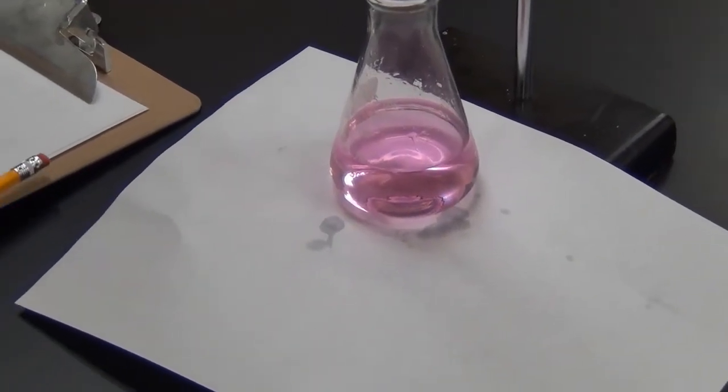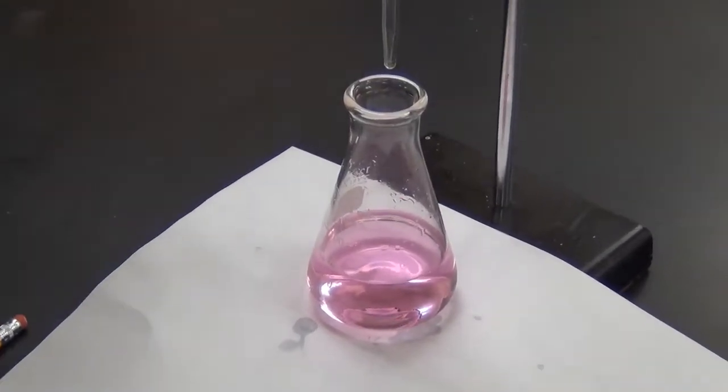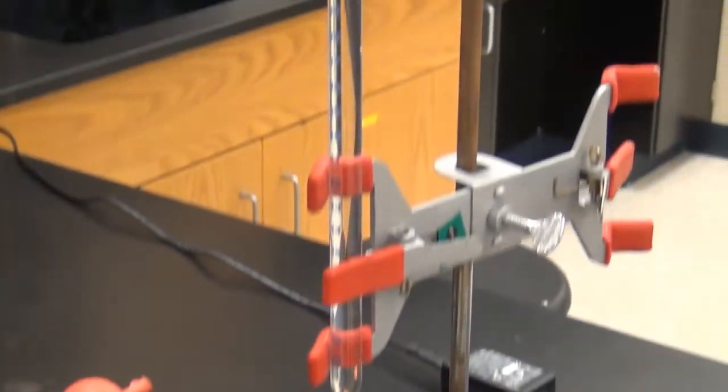Okay, so now we have a persistent pale pink color even with swirling, so we can get the final volume for our sodium hydroxide.